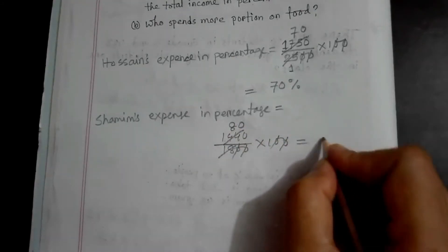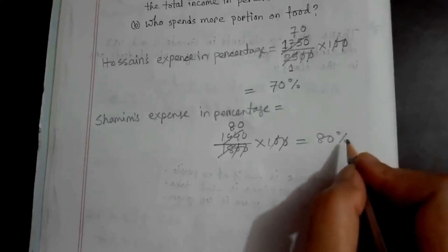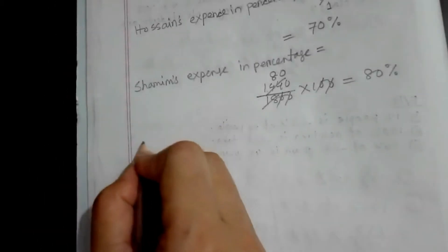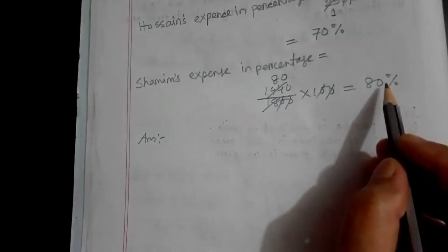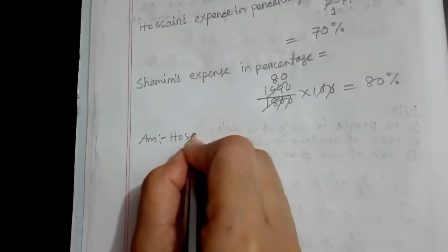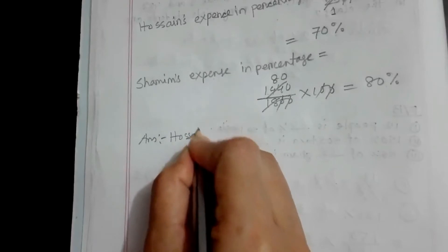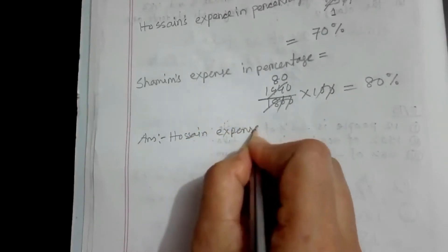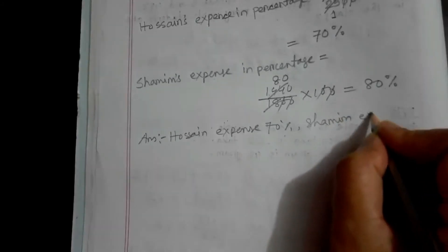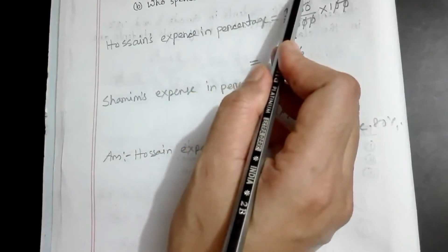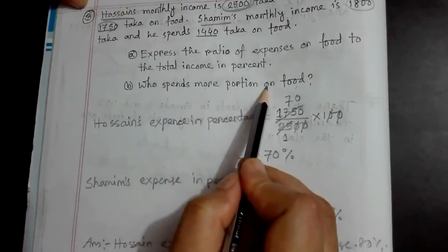For Shamim, we will get 80 percent. So Hosain's food expense percentage is 70 percent and Shamim's food expense percentage is 80 percent.